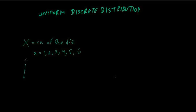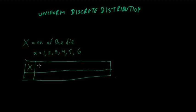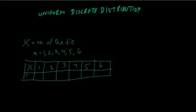If you think about this and draw a table, the discrete random variable can take instances 1, 2, 3, 4, 5, or 6. The probability that the random variable equals any given instance — they are all equal.